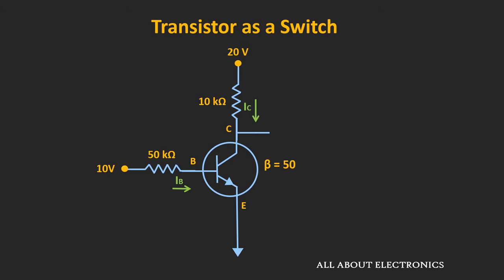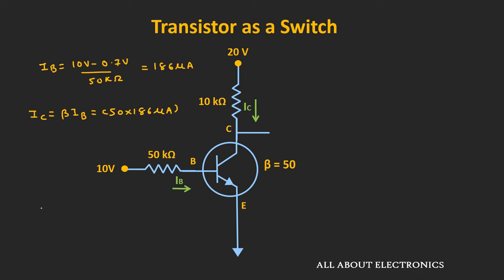Similarly, when the input voltage is 10V, then the transistor will operate in the saturation region. Because at that time, the base current Ib is equal to (10V − 0.7V) divided by 50kΩ, that is equal to 186μA. And assuming the transistor is operating in the active region, the value of the collector current Ic is equal to β times Ib, that is equal to 50 times 186μA, which means the collector current Ic is equal to 9.3mA. Here, the value of Ic(sat) is equal to 20V divided by 10kΩ, that is equal to 2mA. So as this collector current Ic is greater than Ic(sat), we can say that the transistor operates in the saturation.